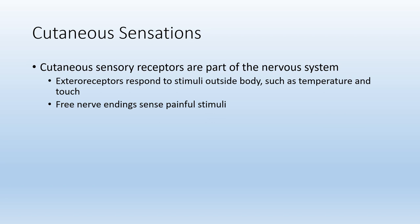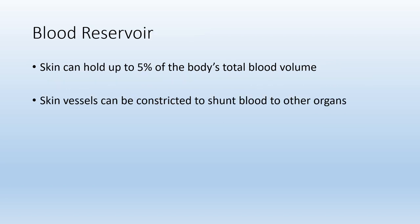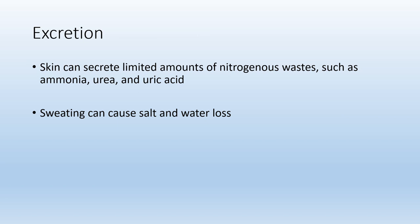In the epidermis and dermis, we have many different types of receptors that respond to stimuli in the external environment — something as simple as touching your car keys or grabbing a hot cup of coffee. Because of these cutaneous receptors, we are able to detect stimuli in the skin. Skin is also a blood reservoir, able to store some of the body's total blood volume. The vessels in the dermis can constrict or shunt blood elsewhere, like to working organs during exercise. Lastly, skin functions in the excretion of wastes like nitrogenous wastes and ammonia, and also secretes salt and water in the form of sweat.